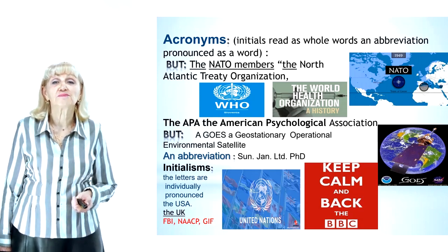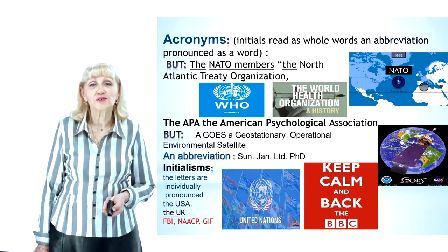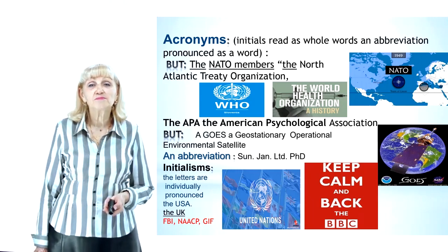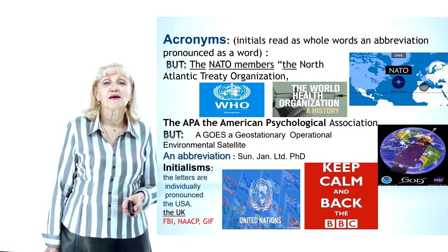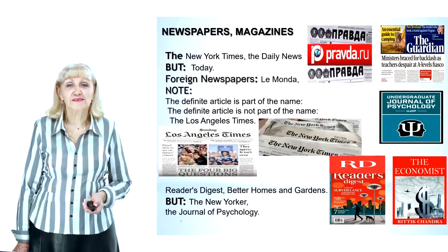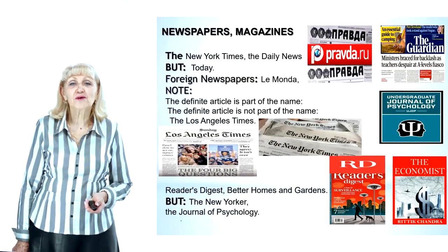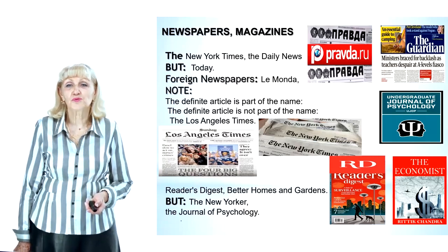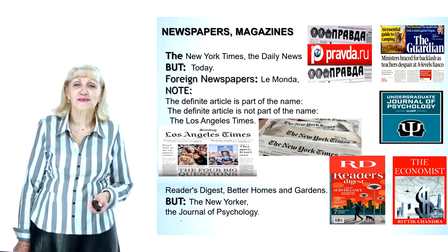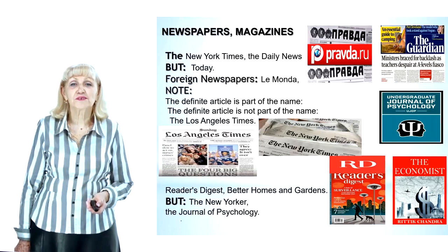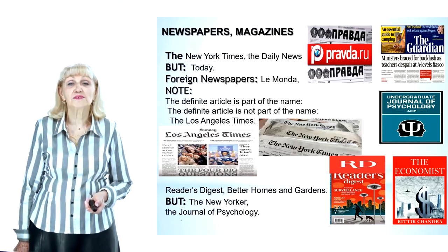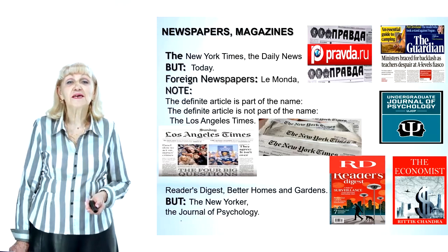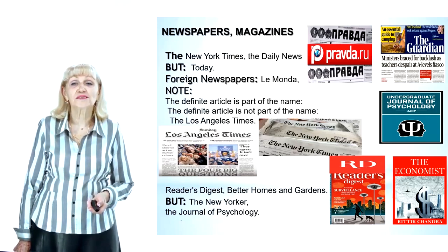No article is used for magazines — for example: Reader's Digest, Better Homes and Gardens, Forbes, Newsweek, New Musical Express. But: The New Yorker, The Economist, The Journal of Psychology. Note: the definite article is part of the name in 'The New York Times' but is not part of the name in 'The Los Angeles Times'.